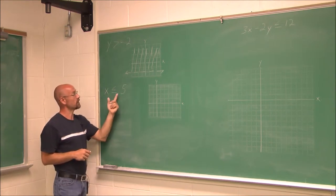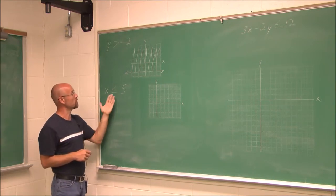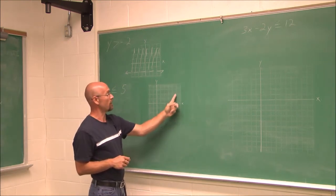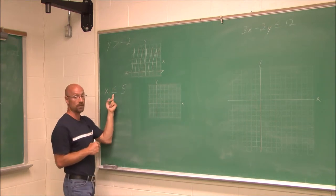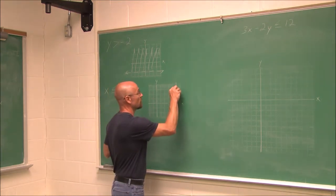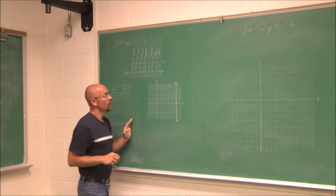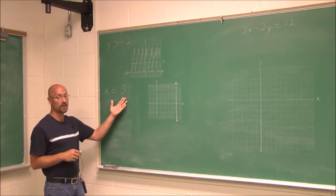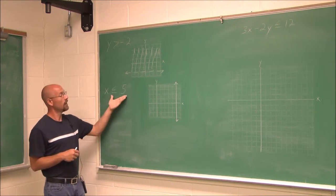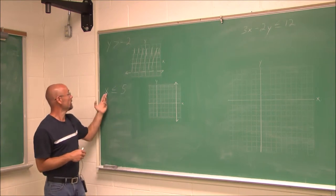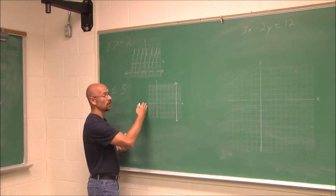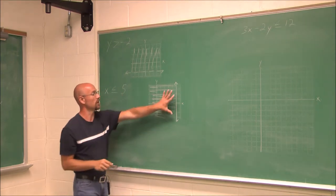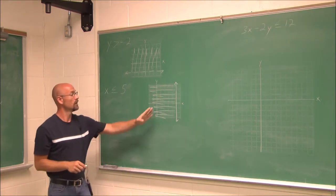Next, we have x is less than or equal to 5. We recognize this as a vertical line at x equals 5. I assess the symbol — it can be equal to — so I draw a solid line. Now I choose a value either to the left or right. Since x is less than, I know any value to the left on a number line would be less than 5. I choose x equals 0: is 0 less than 5? Yes. So I shade all values to the left of that vertical line.